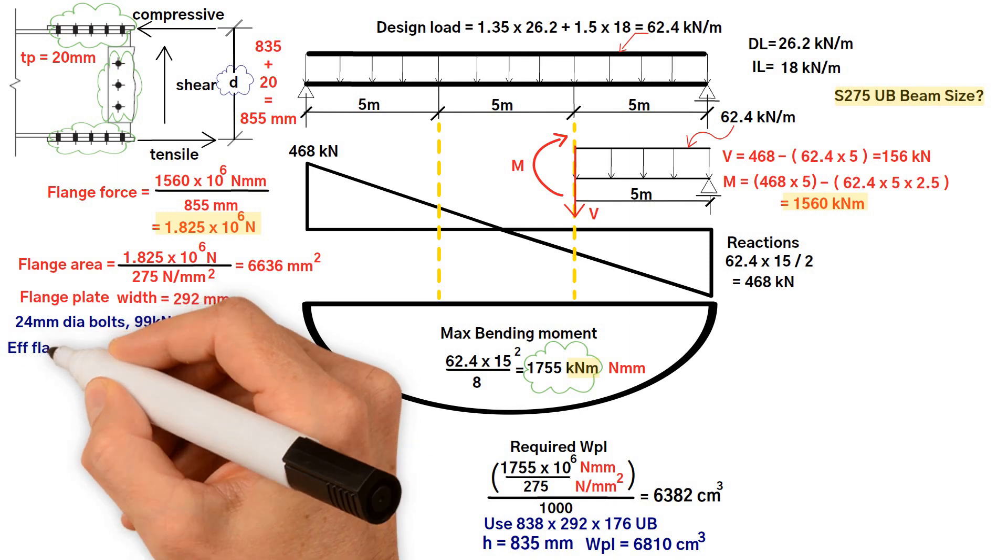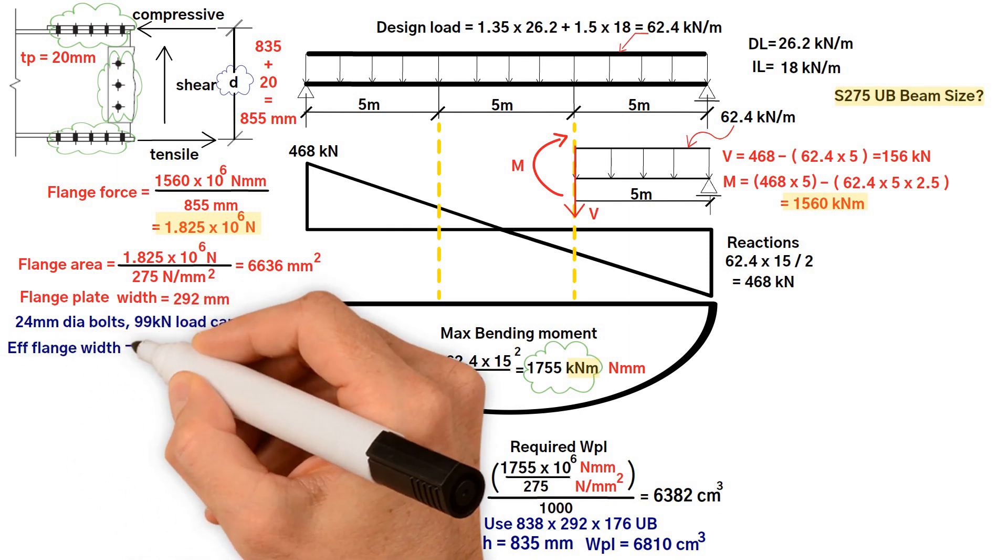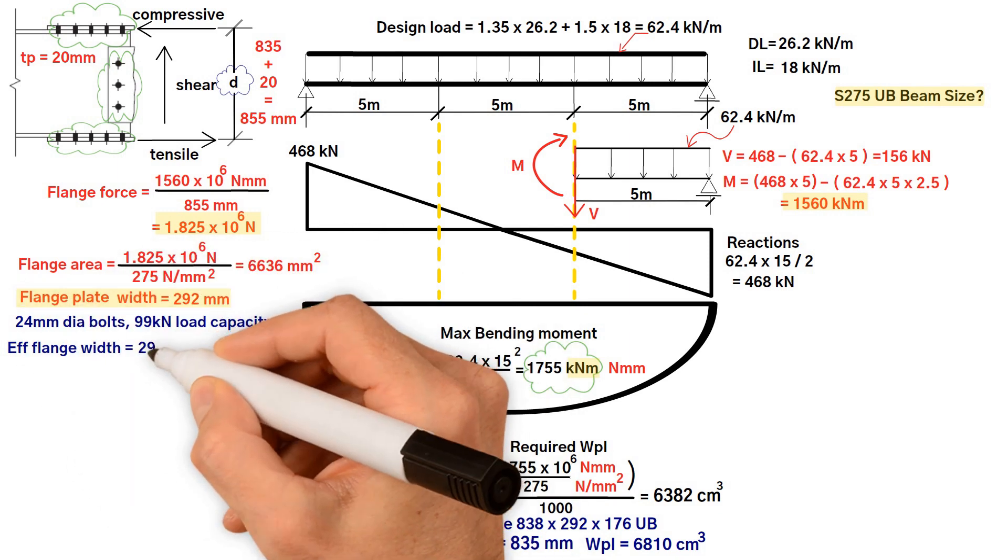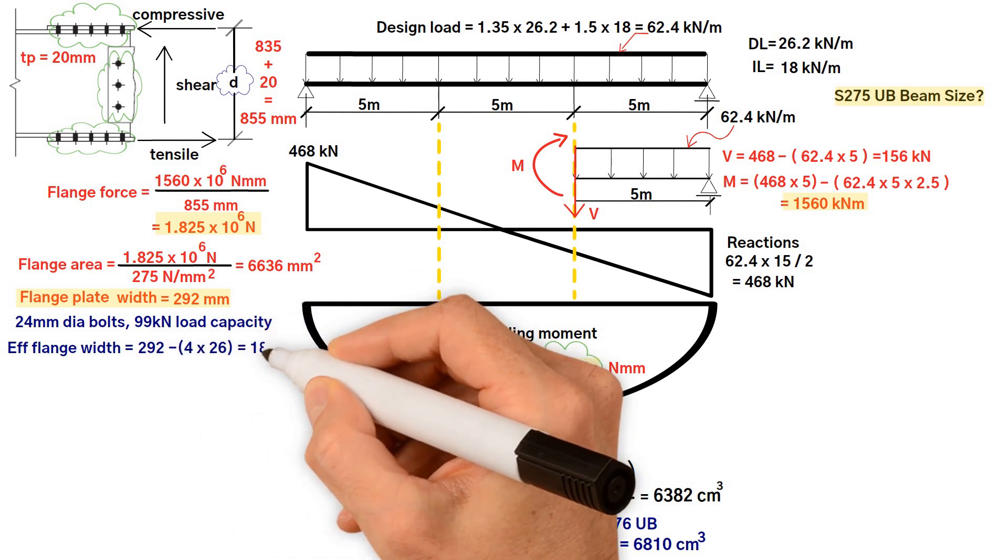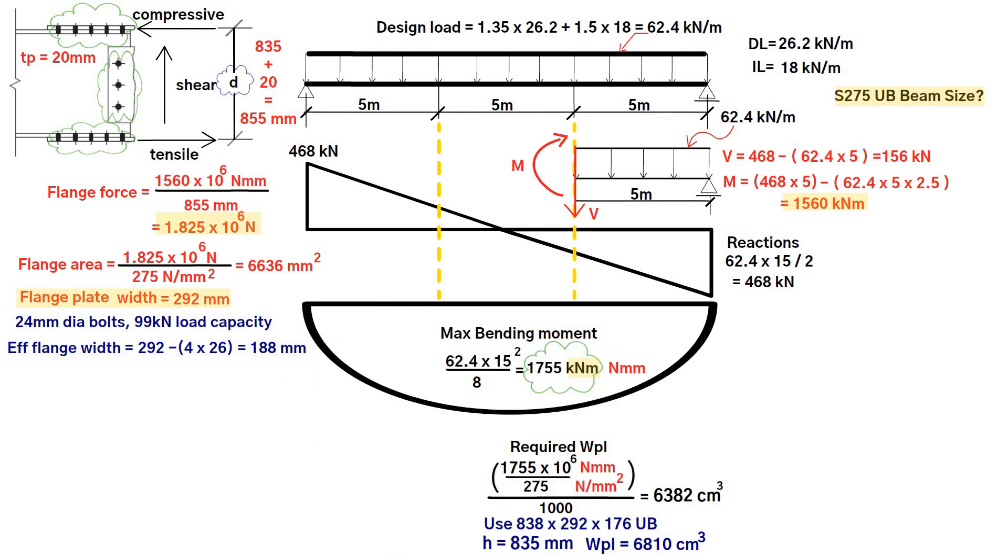So the effective flange width equals flange plate width 292 millimeters minus number of bolts 4 times diameter holes 26 millimeters equals 188 millimeters.